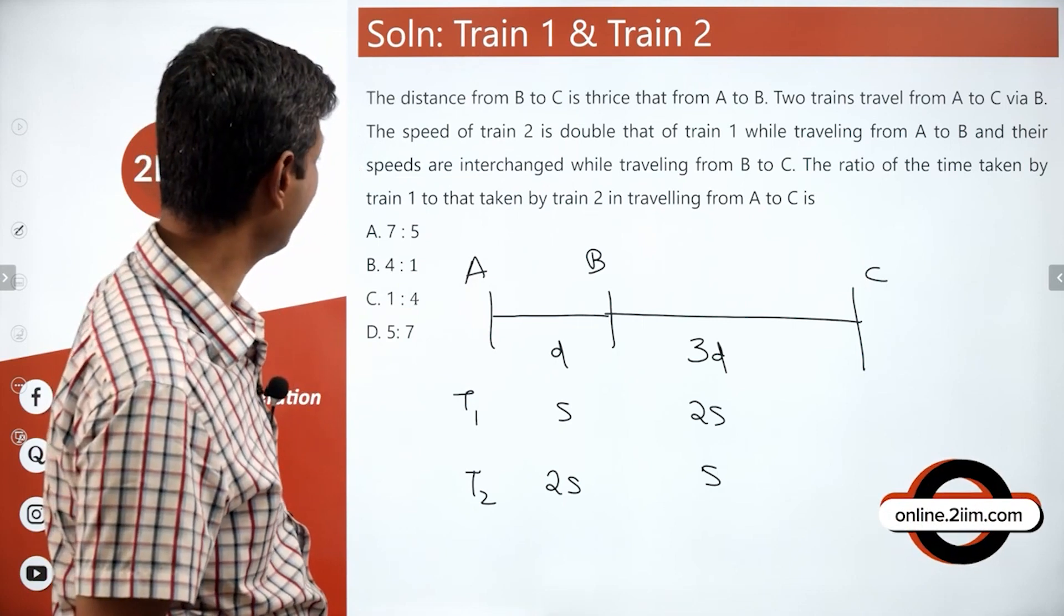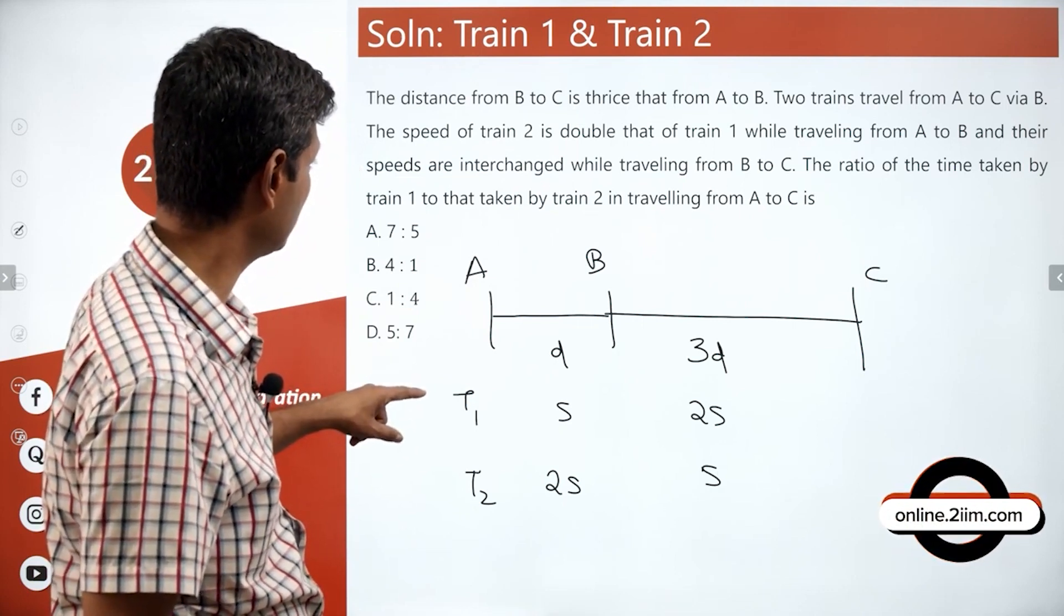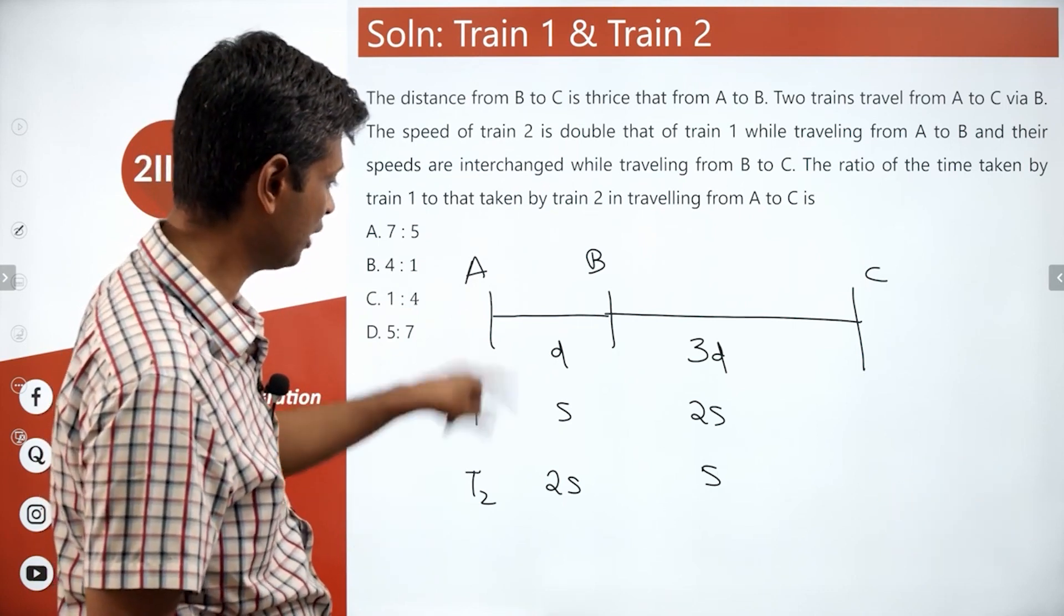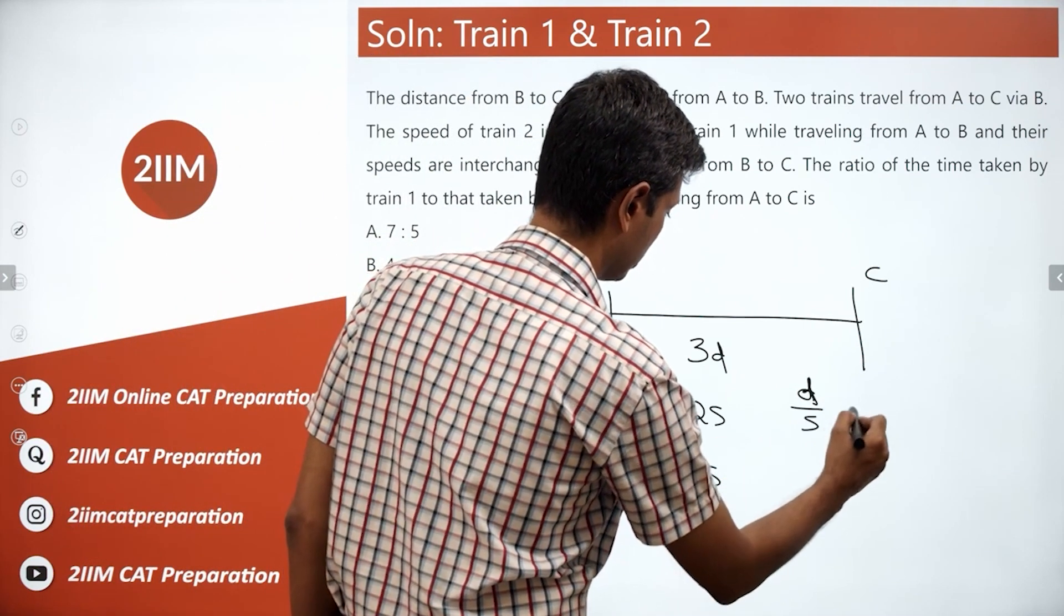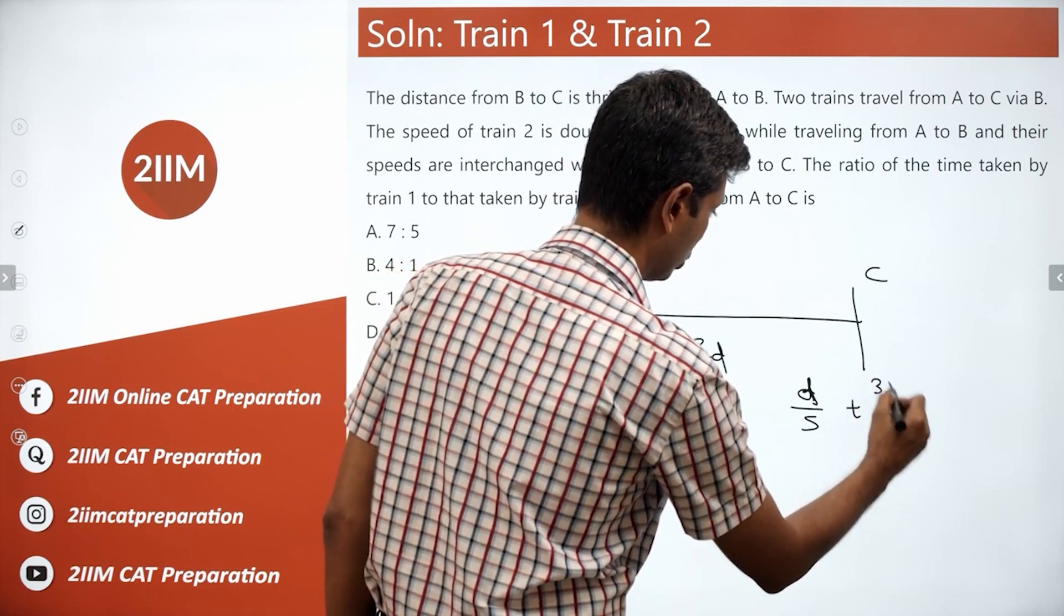The ratio of the time taken by train 1 to that taken by train 2. Train 1 time taken would be D by S plus 3D by 2S.